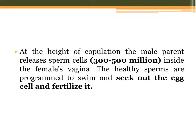At the height of copulation, the male parent releases 300 to 500 million sperm cells inside the female's vagina. The healthy sperms are programmed to swim and seek out the egg cell and fertilize it. During sexual intercourse, the male releases sperm and that sperm will race towards the egg cell, and when they finally meet, fertilization will occur.